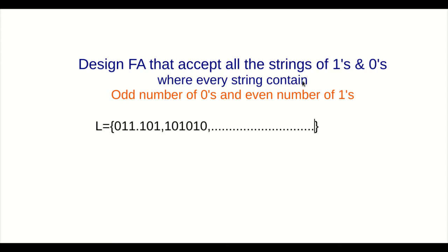This is an FA that accepts all the strings of 1s and 0s where every string contains an odd number of 0s and even number of 1s. That is, the number of 0s is odd but the number of 1s is even.